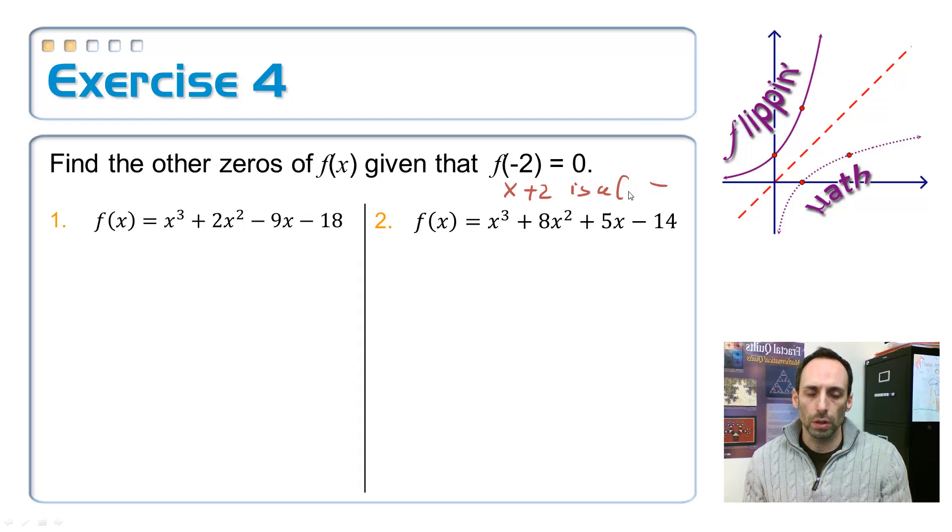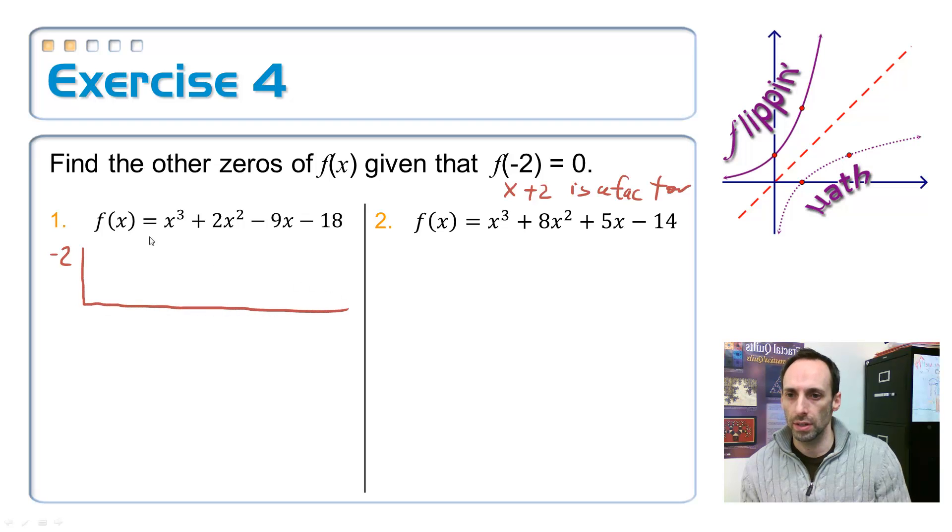So tell me this. Am I going to divide this synthetically by negative 2? Or am I going to divide it by positive 2? It's the negative 2. So negative 2, because if this is the factor, I'd change the sign. If I'm just synthetically substituting in negative 2, I don't change the sign. So negative 2 outside the box. Inside, I've got nothing missing. A 1, a 2, a negative 9, negative 18.